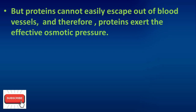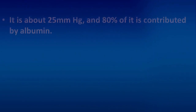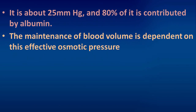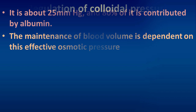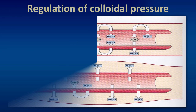Proteins cannot easily escape out of blood vessels, and therefore proteins exert the effective osmotic pressure. This effective osmotic pressure is about 25 mmHg, and 80% of it is contributed by albumin. The maintenance of blood volume is dependent on this effective osmotic pressure, also known as regulation of colloidal pressure.